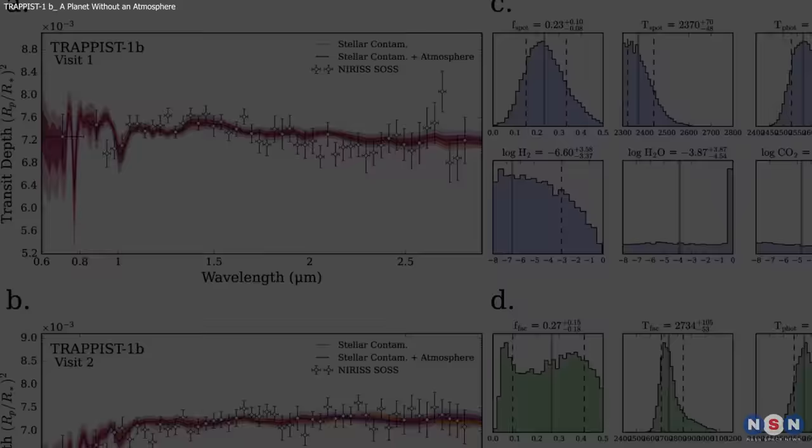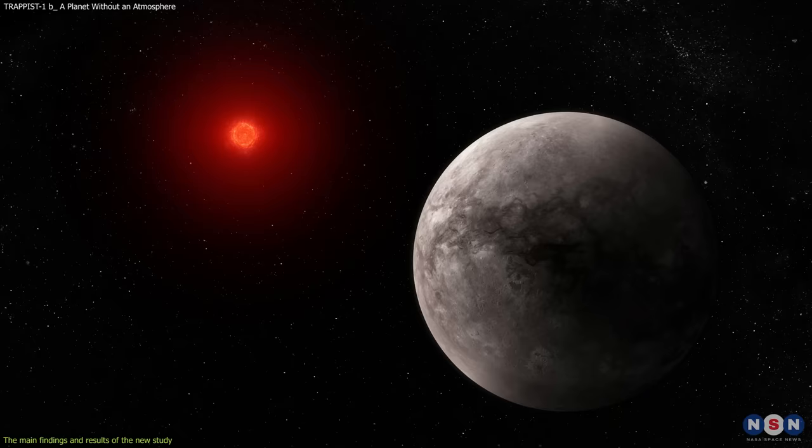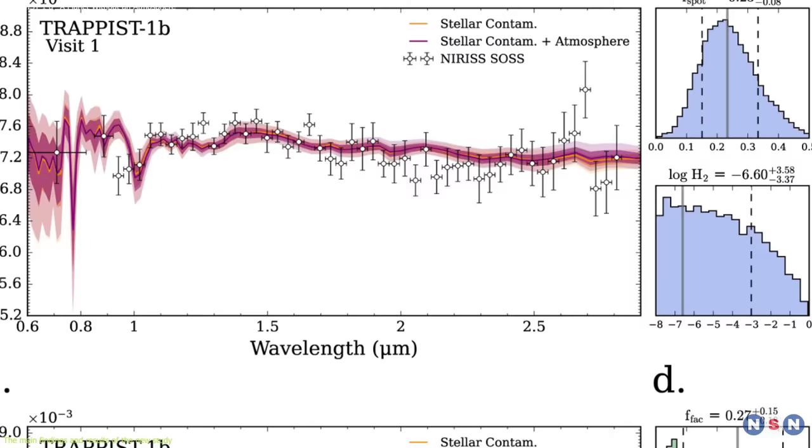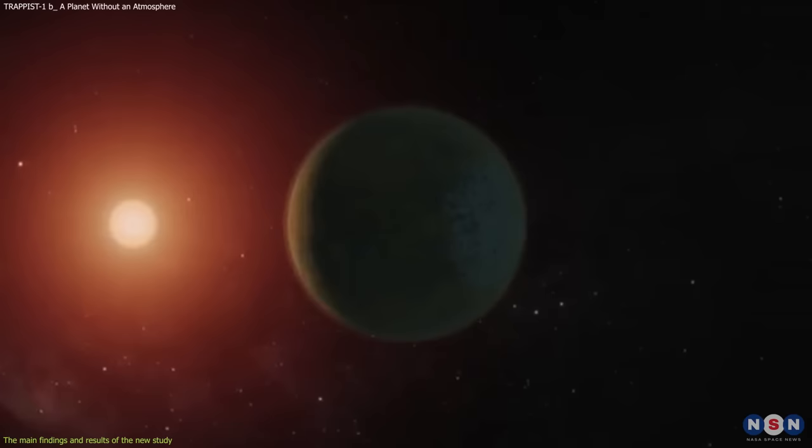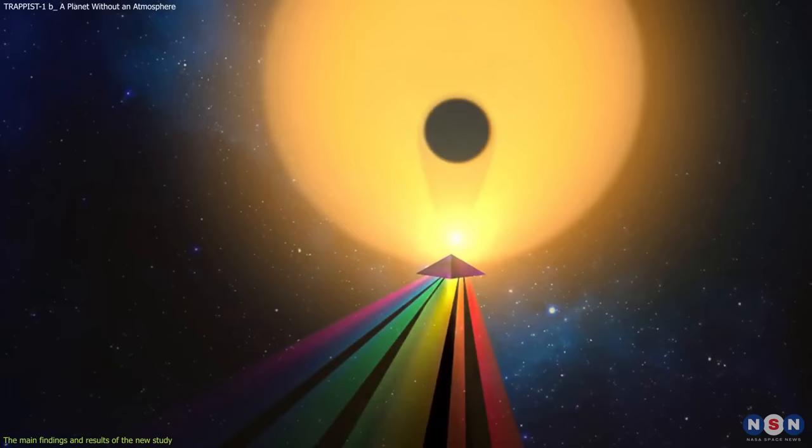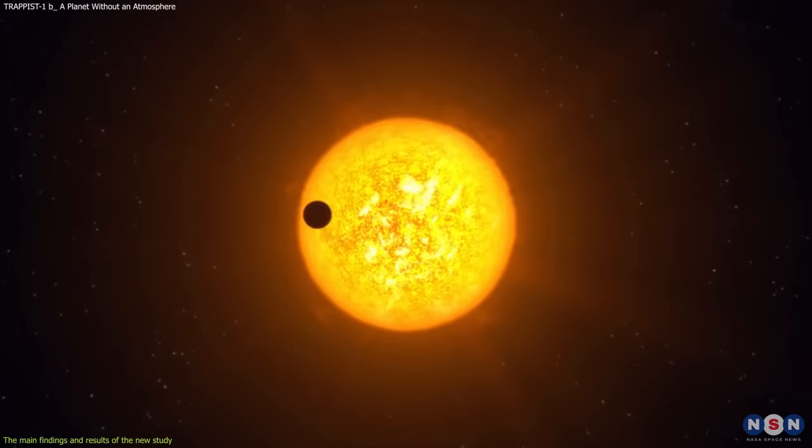The main findings and results of the new study were surprising and disappointing at the same time. They found that TRAPPIST-1b does not have a detectable atmosphere. The spectrum of TRAPPIST-1b was flat and featureless across all wavelengths observed by NIRSPEC and MIRI. This means that there was no evidence of any gases or molecules in its atmosphere that could absorb or emit infrared light.